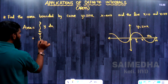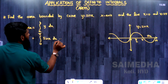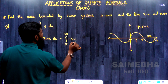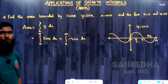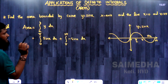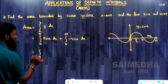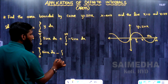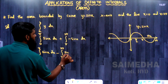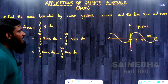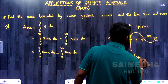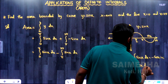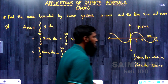So Area = integral from 0 to π of sin x dx + integral from π to 2π of (-sin x dx). This gives: integral from 0 to π of sin x dx minus integral from π to 2π of sin x dx. For reference, the integral of sin x = -cos x + c, and the integral of cos x = sin x + c. Since we have limits, no need to write +c. So integrating: [-cos x] from 0 to π, minus [-cos x] from π to 2π.